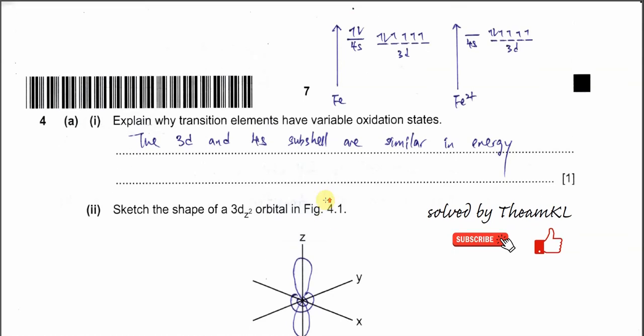Question 4a part 1: Explain why transition elements have variable oxidation states. The answer in the mark scheme is that the 3d and 4s sub-shells are similar in energy, or their energy levels are very close.